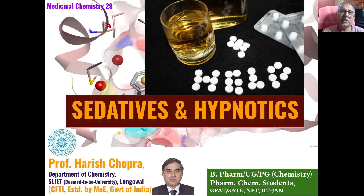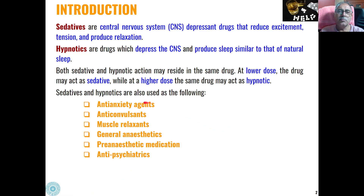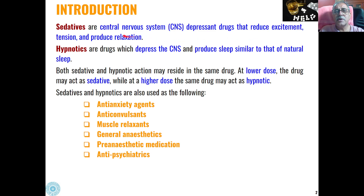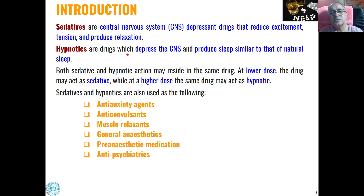Dear students, this is our 29th lecture on medicinal chemistry and today we will discuss about sedatives and hypnotics. Both these types of drugs are used as central nervous system depressants, whereas their application is different for different types of diseases. Sedatives reduce excitement, tension and produce relaxation in the patient, whereas hypnotics produce sleep similar to our natural sleep. They are generally given to patients suffering from insomnia, whereas sedatives are given to patients suffering from anxiety.